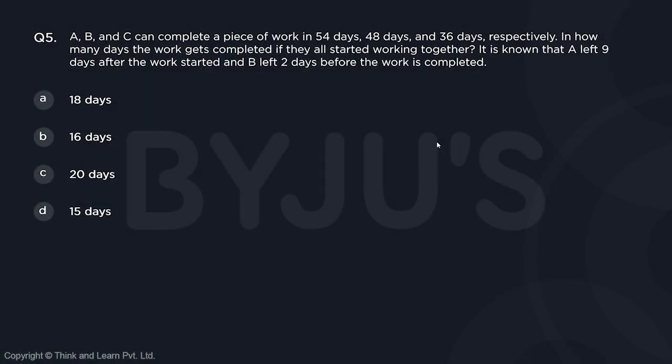A, B, and C can complete a piece of work in 54 days, 48 days, and 36 days respectively. In how many days does the work get completed if they all started working together? It is known that A left 9 days after the work started and B left 2 days before the work is completed.